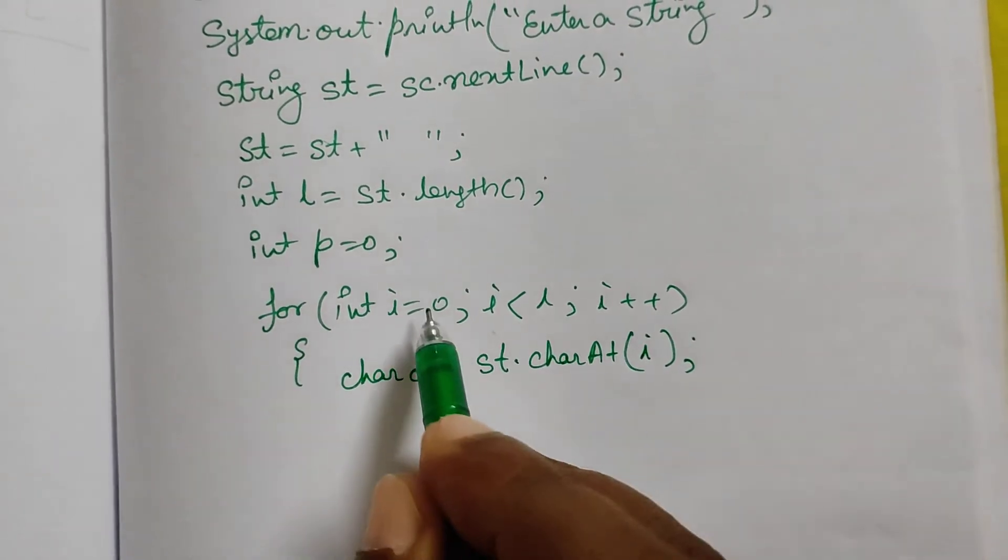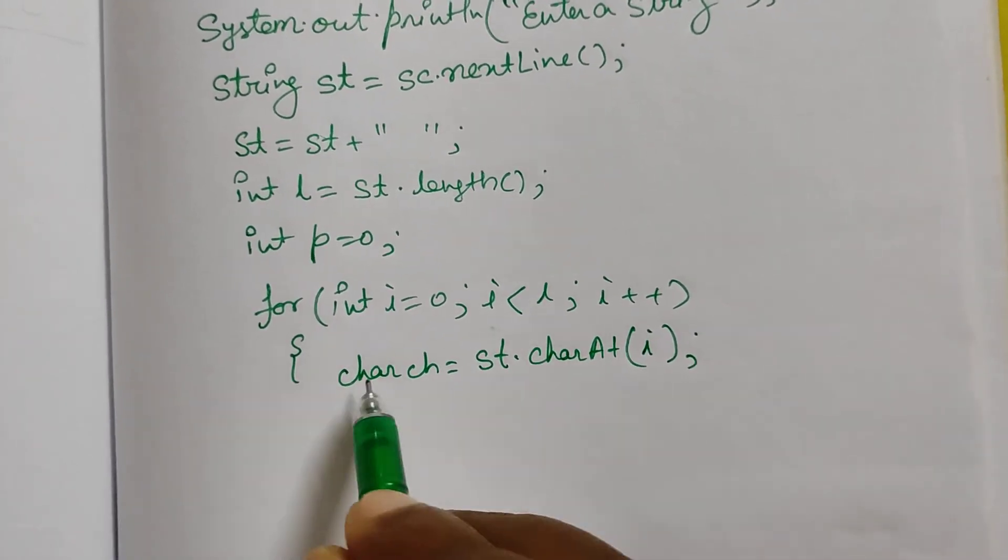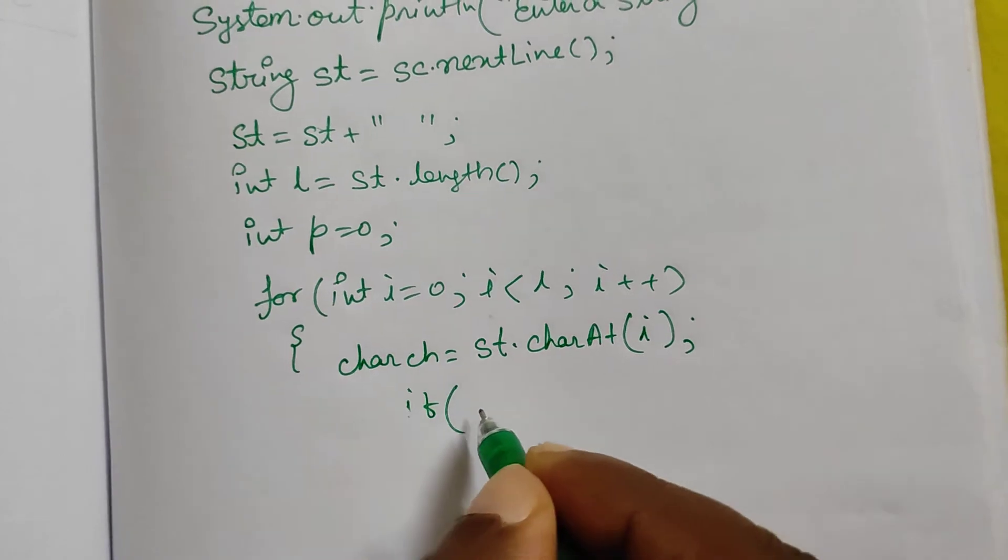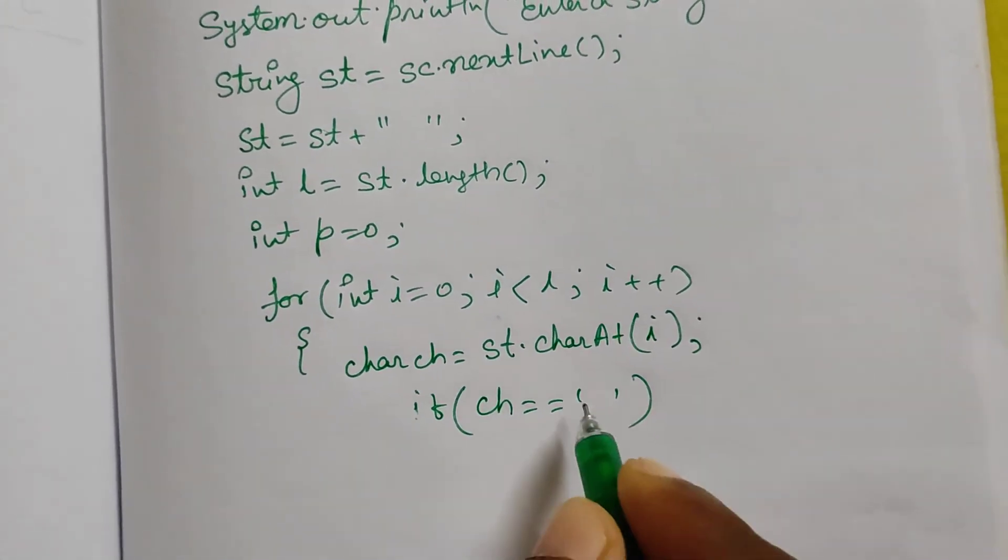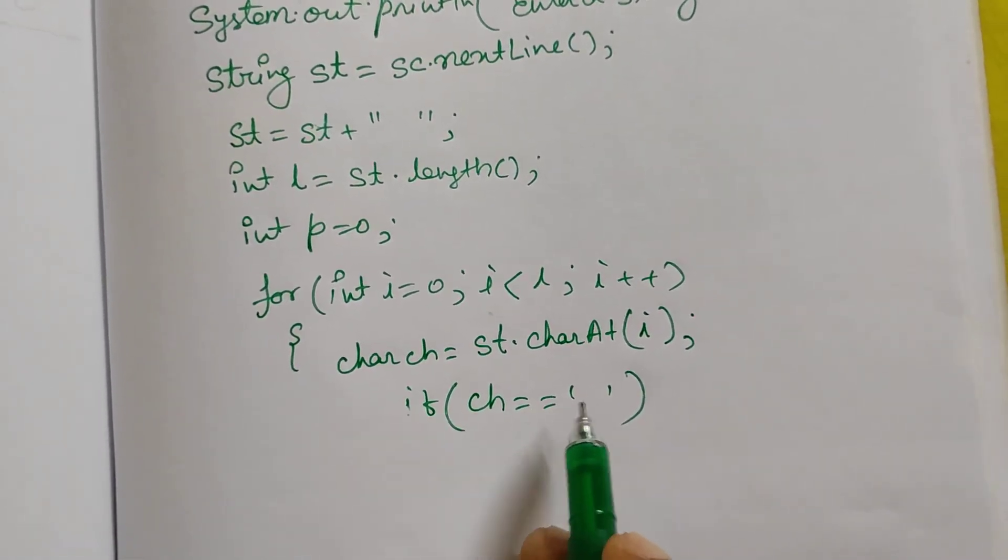The position of i is now zero, so from the first position, one after another, we will get the characters. Then we will check if our ch == ' '. Single quotation open, space, single quotation close. If ch == ' ',